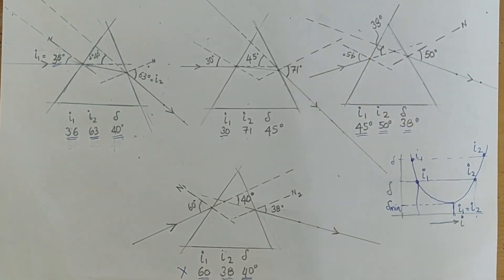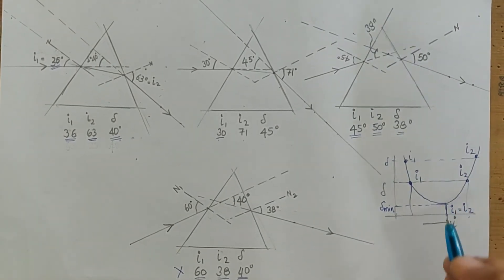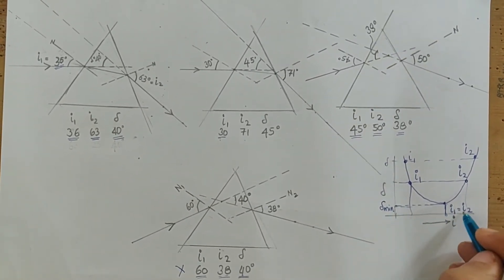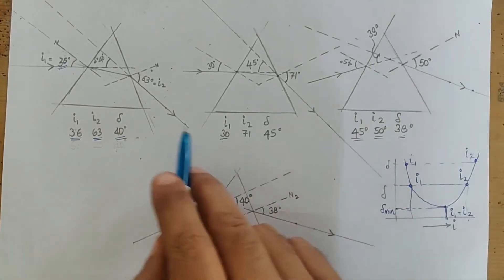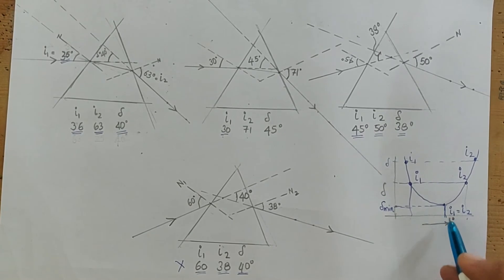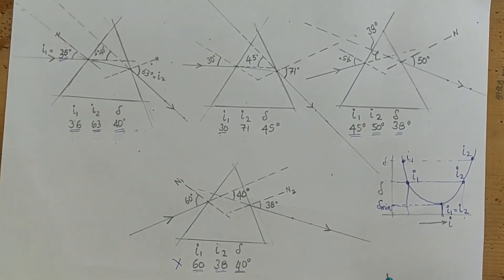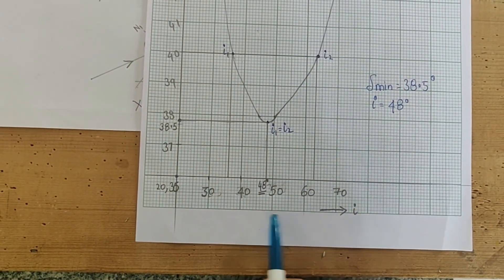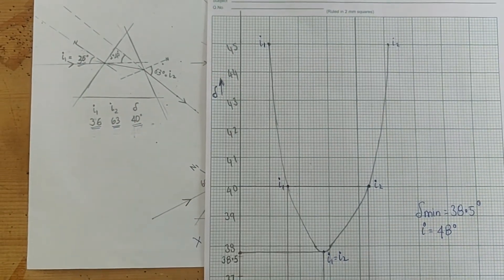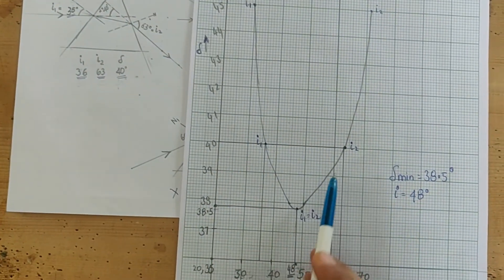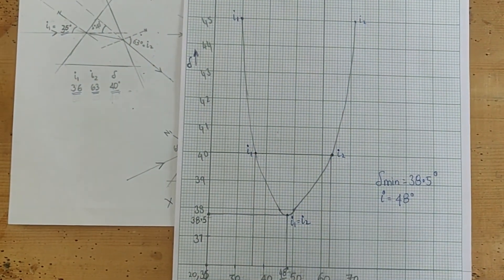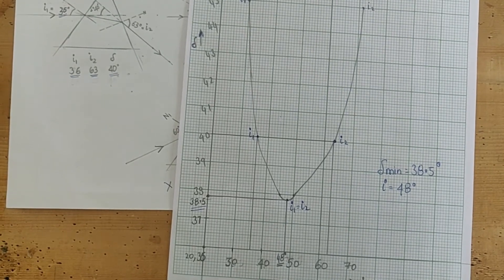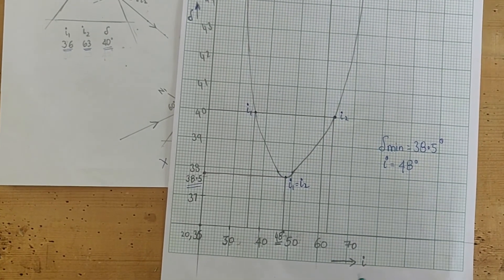As you keep plotting, you will see the graph takes the shape of a parabola, which means it has a vertex — that's the minimum deviation. This minimum deviation happens when i1 equals i2. If you plot the graph you can extrapolate what the minimum deviation will be. In this graph, the x-axis is i and the y-axis is delta. We plot all the points, draw the parabola, and extrapolate to find the minimum deviation — which in this case is 38.5 degrees.